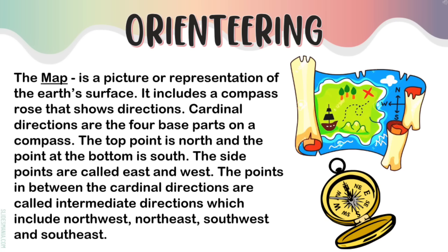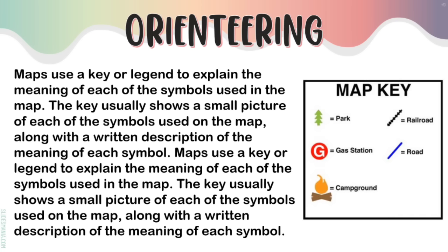The map is a picture or representation of the Earth's surface. It includes a compass rose that shows directions. Cardinal directions are the four base parts on a compass — the top point is north, the bottom is south, and the side points are east and west. The points in between are called intermediate directions, which include northwest, northeast, southwest, and southeast. Maps use a key or legend to explain the meaning of each of the symbols used in the map. The key shows a small picture of each symbol along with a written description of its meaning.